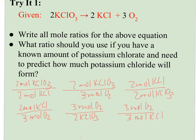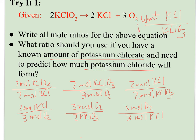Which ratio should you use if you have a known amount of potassium chlorate and you want to predict how much potassium chloride? That means I want to know about chloride compared to chlorate — my want over my have. The ratio that corresponds to this is chloride over chlorate. In this case, if you flip-flopped it, it wouldn't be a big deal because it happened to be the same ratio, but that is not generally the case.